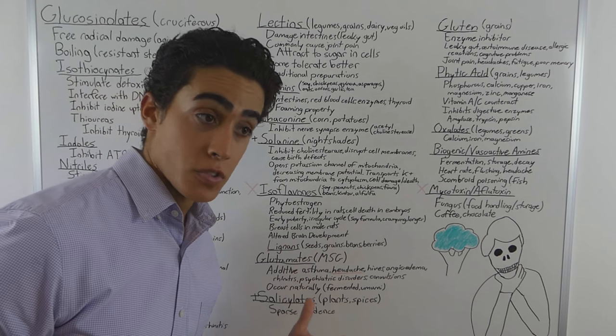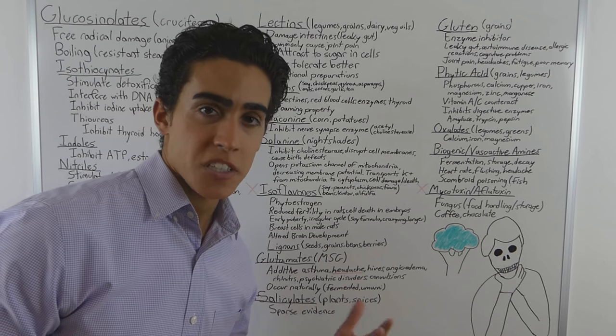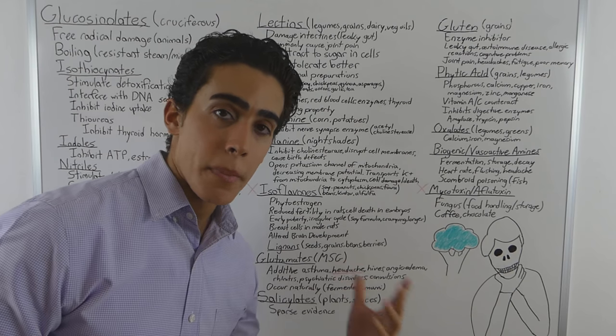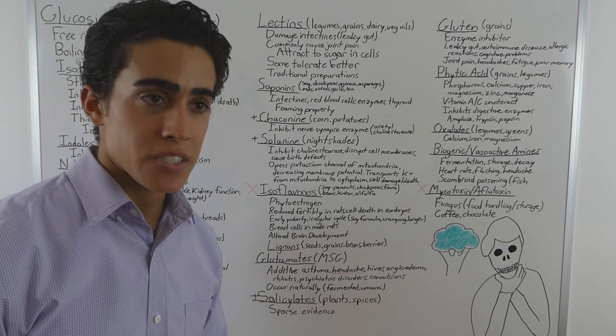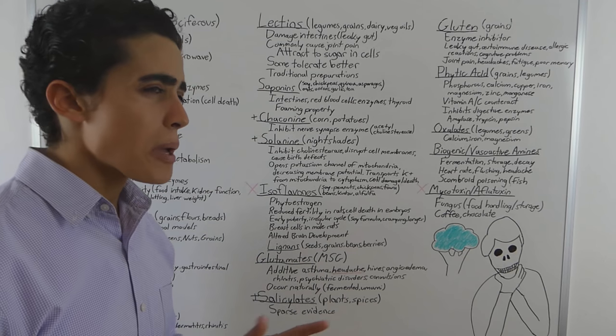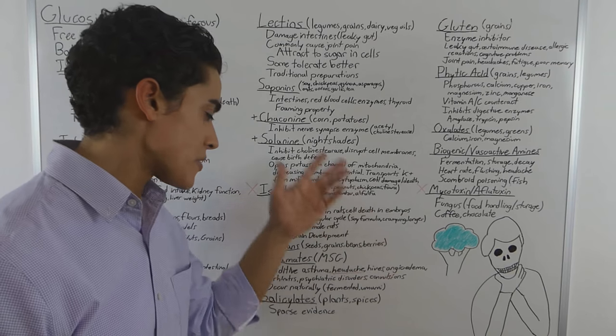But they do occur naturally in foods. The reason meat tastes good, especially dry aged meat, is because it has high levels of umami. So do foods like mushrooms and tomatoes. So natural MSG is not necessarily a bad thing to consume, but additive is definitely maybe not relating too much to anti-nutrients, but I figured I'd throw it in there.